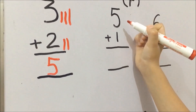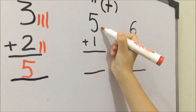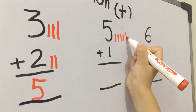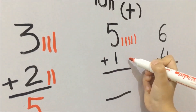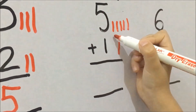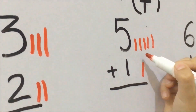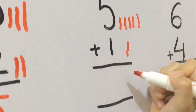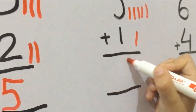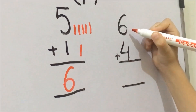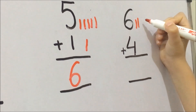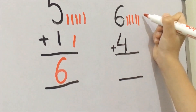Friends, here 5 answers, we have to write 5 lines — 1, 2, 3, 4, 5. Friends, here 1 answer, we have to write 1 line. Now we have to add them — 1, 2, 3, 4, 5, 6. Friends, here 6 answers, we have to write 6 answers. Here 6 lines — 1, 2, 3, 4, 5, 6.